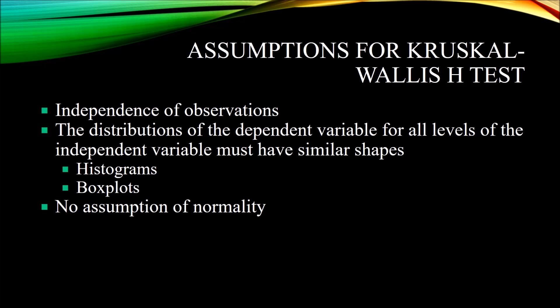You'll notice that under the assumptions for the Kruskal-Wallis H-Test there is no assumption of normality. The Kruskal-Wallis H-Test is a non-parametric alternative to a one-way ANOVA, and a one-way ANOVA does assume normality on the dependent variable for each level of the independent variable. So if your data fail to meet the assumption of normality, the Kruskal-Wallis H-Test could be a good alternative. I hope you found this introduction useful. Thanks for watching.